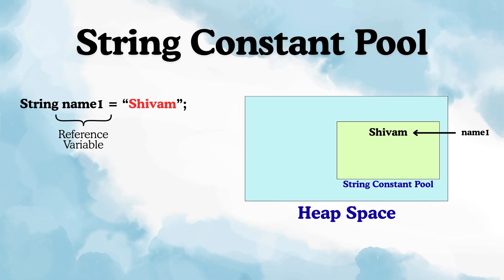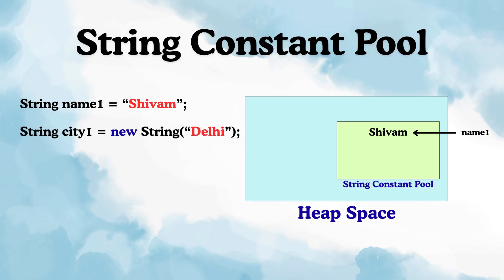Now here is where it gets interesting. If you create a string like this — string city1 is equal to new string delhi — because we use the new keyword, Java says: alright, this is an object, so I'll create a new string object in the heap memory. But it is also a string, so Java also keeps the literal delhi in the pool. That means now we have two things in memory: one delhi in the pool, and another delhi in the heap. And the reference variable city1 will be pointing to the one in the heap, not the one in the pool.